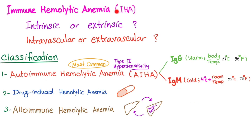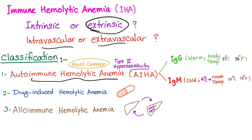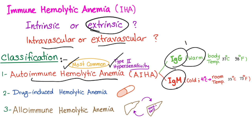Immune hemolytic anemia is extrinsic or extracorpuscular, and could be either intravascular or extravascular. Classification: we have three different subtypes. Autoimmune hemolysis is by far the most common. It's a type 2 hypersensitivity reaction, could be with IgG or IgM. Today's topic is IgG, or the warm subtype.